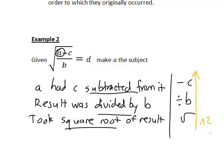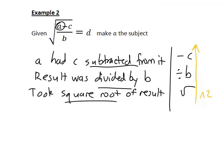Writing this out with squaring both sides, we get the square root of a minus c divided by b all squared is equal to d squared.